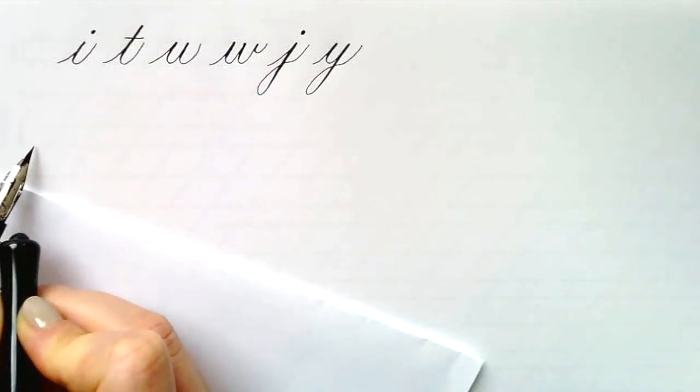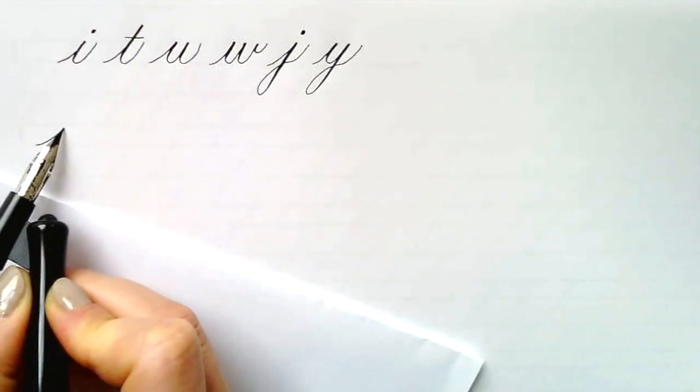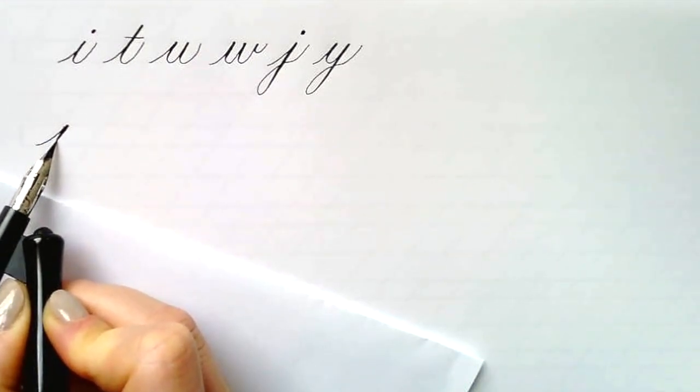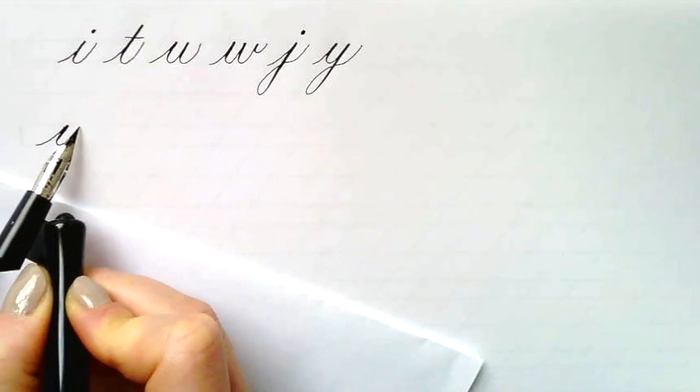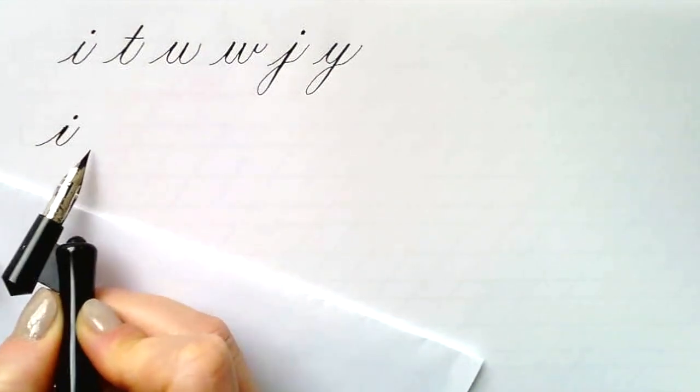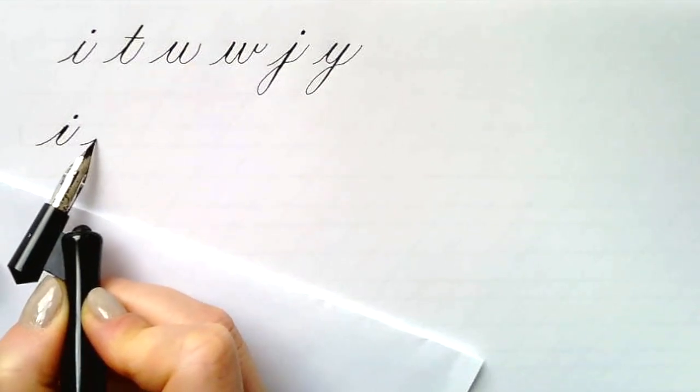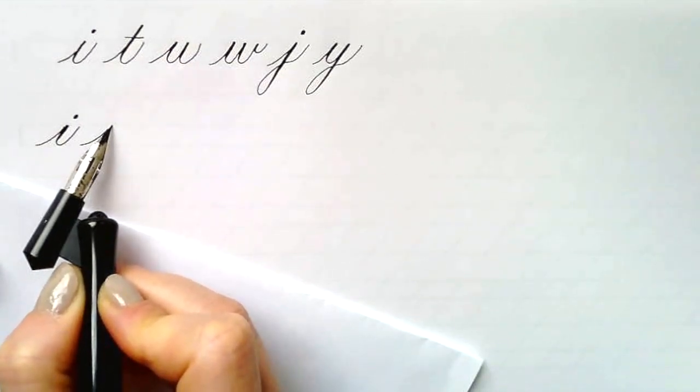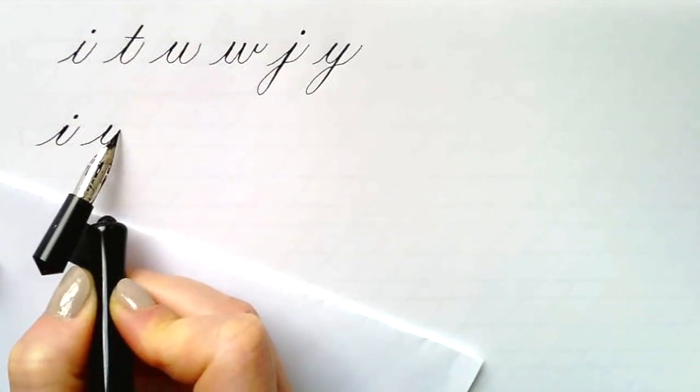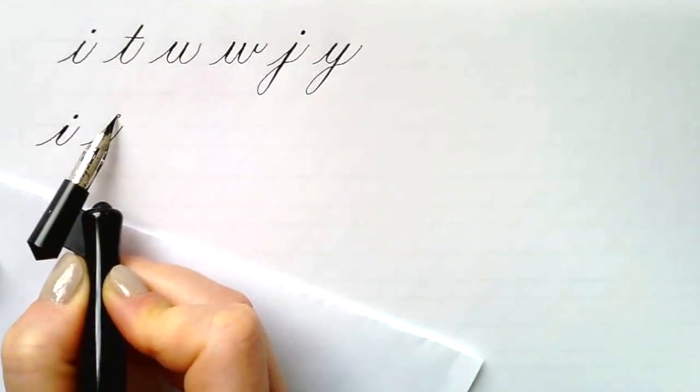We'll have the in stroke, place at the baseline, swoop up, and then an underturn arch. Place, press, pull, release, curve up, and the dot of the eye is a little circle that we're going to fill in. Let's do another one. Swoop up, place, press, pull, release, and curve light up, and a little circle.